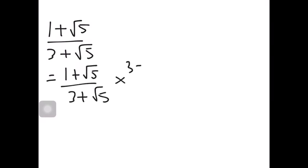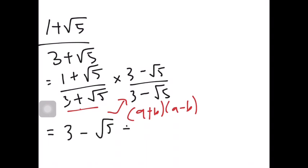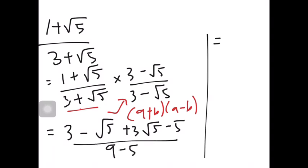The question given is 1 plus surd 5 over 3 plus surd 5. So how to solve it? We need to multiply this equation with 3 minus surd 5 over 3 minus surd 5. Why do we need to use 3 minus surd 5? Because we need to rationalize this using the conjugate surd, which is the same as A plus B, A minus B. So it is going to be 3 minus surd 5 plus 3 surd 5 minus 5 over 9 minus 5. So equals to negative 2 plus 2 surd 5 over 4. We can simplify it by dividing these 2 with 4, so it is going to be negative 1 plus surd 5 over 2.